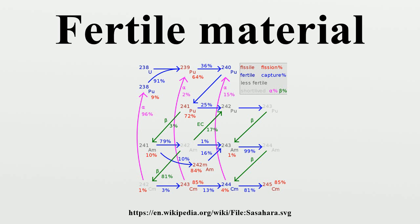Breeder reactors using thermal spectrum neutrons are only practical if the thorium fuel cycle is used, as uranium-233 fissions far more reliably with thermal neutrons than plutonium-239.